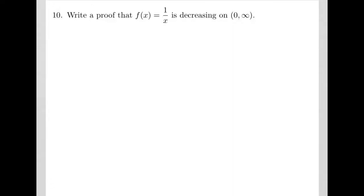Problem 10 asks us to write a proof that f of x equals 1 over x is decreasing on the interval 0 to infinity. This is not asking us to use the derivative — when it says we need to prove, we need to refer to the definition or a theorem. We don't actually have any theorems yet, so this is going to require us to look at the definition.